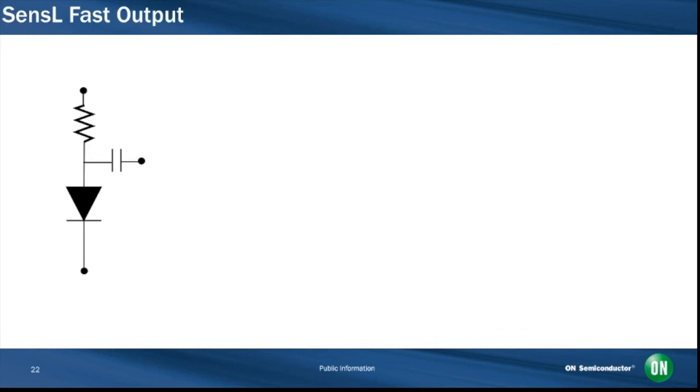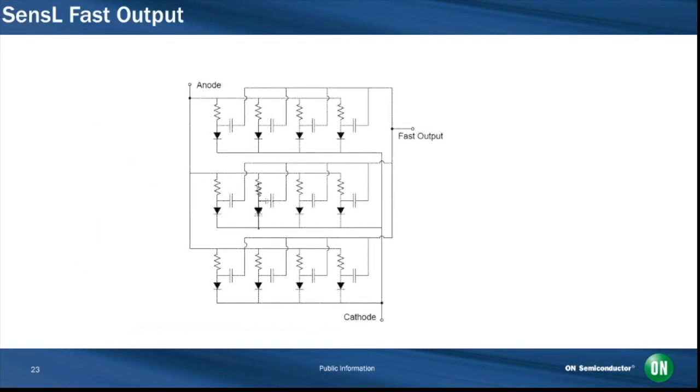The fast output signal is then the derivative of the internal fast switching of the microcell in response to the current flow from a detected photon. SensL SIPMs therefore have a third terminal for this fast output. And like the anode cathode output, it's formed from the sum of all microcells, so the pulse height is also proportional to the number of triggered microcells.